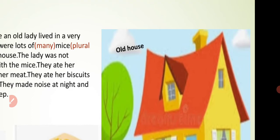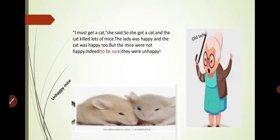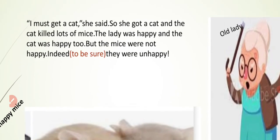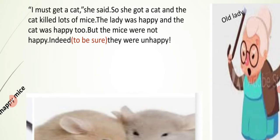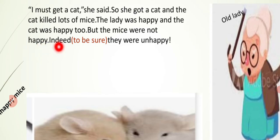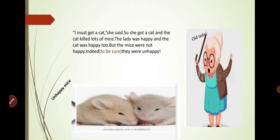Continuing the story: 'I must get a cat,' she said. So she got a cat, and the cat killed lots of mice. The lady was happy and the cat was happy too. But the mice were not happy — indeed, they were unhappy.